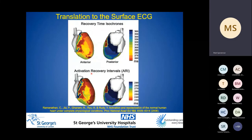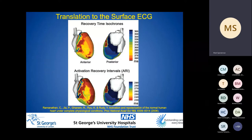More recently, using human epicardial ECGi mapping with a vest consisting of over 200 electrograms mapped to an epicardial CT-created shell, it has been demonstrated that activation recovery gradients are shorter anterobasally and longer posteroapically. This defines the spatial dispersion of repolarization across the human heart.